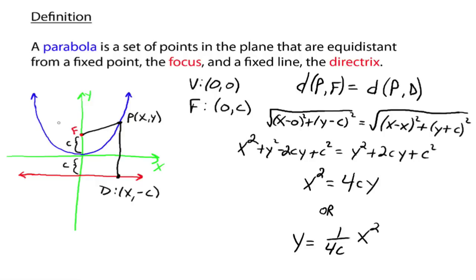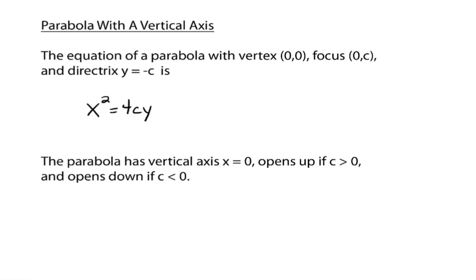Notice this parabola opens up and has a vertical axis of symmetry, which is the y-axis. There are also parabolas that open on their side — right or left — with a horizontal axis of symmetry. Parabolas that open up or down have a vertical axis of symmetry; parabolas that open right or left have a horizontal axis of symmetry.